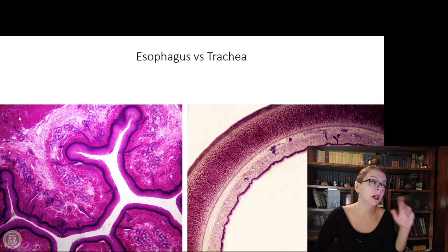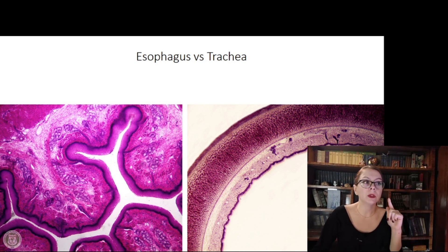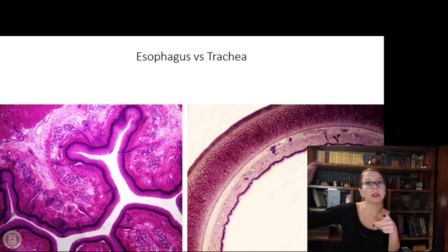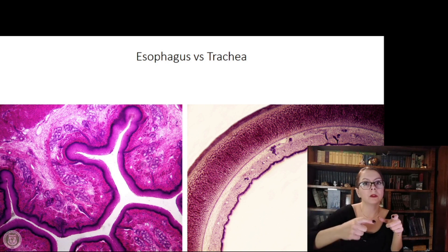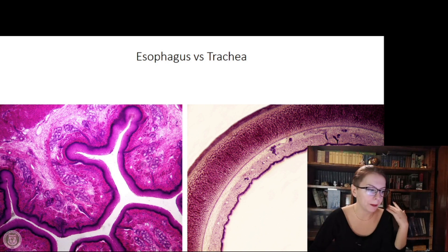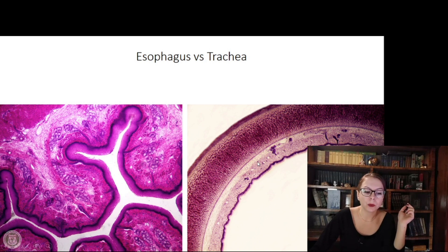After that we have the muscularis, which can be skeletal or smooth depending on the level of the esophagus. In skeletal muscle fibers seen in cross-section, the nuclei are located at the periphery, while in smooth muscle the nuclei are in the center.